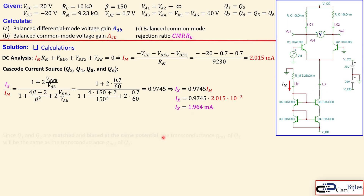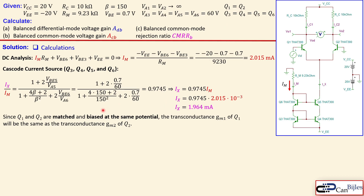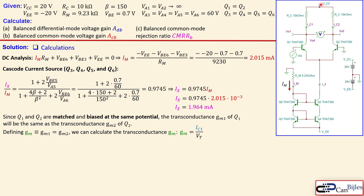Since Q1 and Q2 are matched and biased at the same potential, their transconductances gm1 and gm2 are equal, so we define a single gm for use in questions A and B. We calculate gm using the DC collector current divided by the thermal voltage, which is 26 millivolts at approximately 300 Kelvin room temperature. Since the circuit is symmetric, IC1 equals IC2, so we next designate the emitter currents IE1 and IE2.